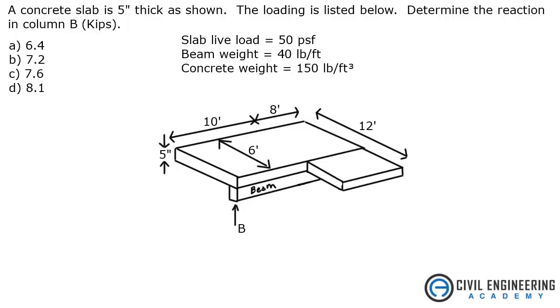A concrete slab is 5 inches thick as shown. The loading is listed below to determine the reaction in column B in kips. We're given a slab live load of 50 PSF, a beam weight of 40 pounds per foot, and a concrete unit weight of 150 pounds per cubic foot. Here's the dimensions of our slabs. We also have this beam running underneath here.